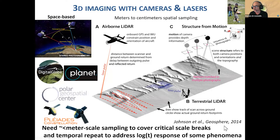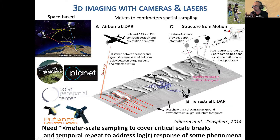The Johnson et al. paper was one that we worked on to assess the quality and compare structure from motion results with airborne laser scanning results. We also tried to talk about this critical meter scale, or even less than the meter scale. The real frontier is going to be the repeat survey, but it's actually harder than you think, because a lot of times you want to align repeated surveys, and that is really the hard part.